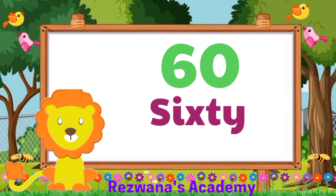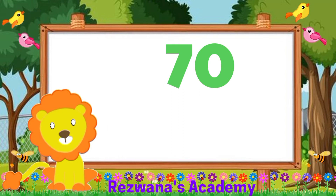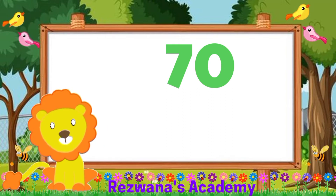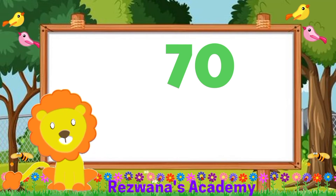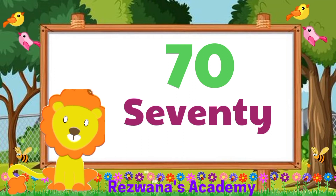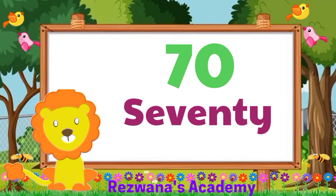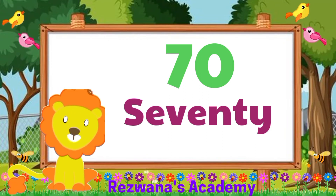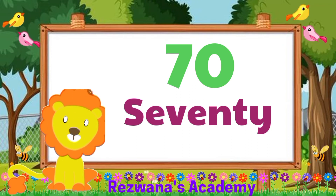Moving on. Now we have number 70. It is made of 7 letters. Wow, what a coincidence — 70 and it has 7 letters! So let's spell them together: S, E, V, E, N, T, Y. 70.